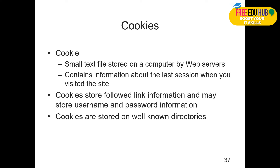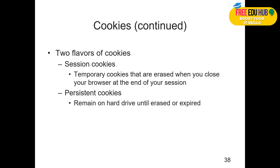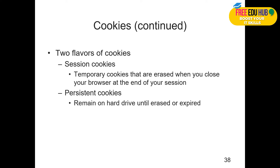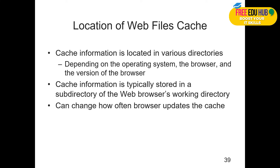Cookies are small text files stored on a computer by web servers. They contain information about the last session when the website was visited and activities performed on the website. Cookies store followed link information and may store username and password information. They are stored in well-known directories which are quite known to hackers. Cookies can be session cookies — temporary, erased when you close the browser — or persistent cookies, which remain on the computer until an expiry date is reached. Sometimes cookie files are placed on computers to track user behavior, buying patterns, and how the user accesses information from websites.